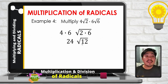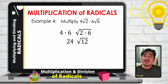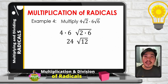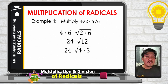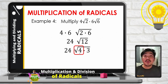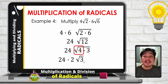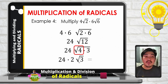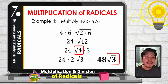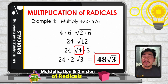Square root of 12 is not yet in its simplest form, because we can think of a factor of 12 which is a perfect square aside from 1 — that would be 4. So we have 24 square root of 4 times 3. The square root of 4 is 2, so we multiply 2 by the coefficient 24 outside. So 24 times 2 times square root of 3. Since 3 is not a perfect square, it remains inside the radical. So the final answer is 48 square root of 3. There are times when we still need to simplify the radical further.